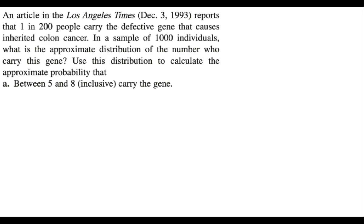The problem says that according to a report, one in 200 people carry a defective gene. In a sample of 1000 individuals, what is the distribution of the number who carry this gene? If we simply ask for the distribution — the number of successes among n trials — there are 1000 trials and probability 1/200, which directly tells us we are talking about binomial distribution.